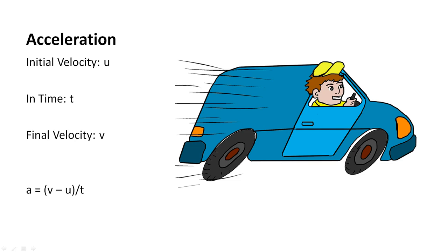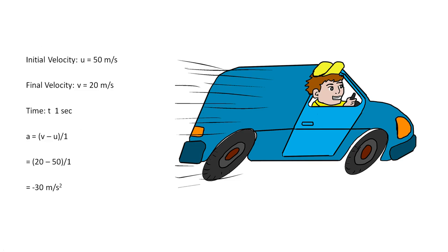So what is retardation? Suppose the initial velocity is 50 meters per second and the driver applies the brake. The final velocity becomes 20 meters per second — velocity is reduced. This happened in one second. By the definition of acceleration, a equals v minus u divided by t, so it is 20 minus 50 divided by 1, which gives minus 30 meters per second squared.